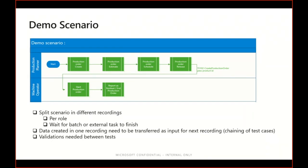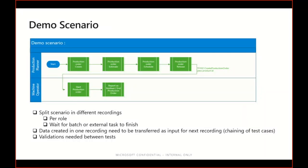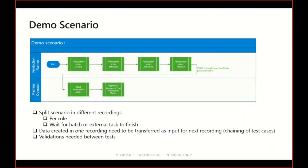This simple scenario already spans two different roles — the production planner and the machine operator. As a best practice, I'll split the recordings per role so each can be played back with the correct security role. I'll also split recordings any time we cross a different role boundary, or when we need to wait for something — for instance, when a specific job can only run after a batch job has executed. In that case, we need to put a wait time between the two task recordings.